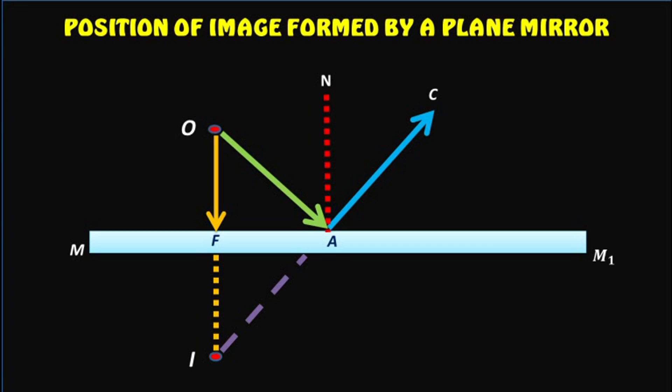The other incident ray OA gets reflected along AC such that angle OAN is equal to angle NAC, where AN is the normal drawn at the point A on mirror M M1.